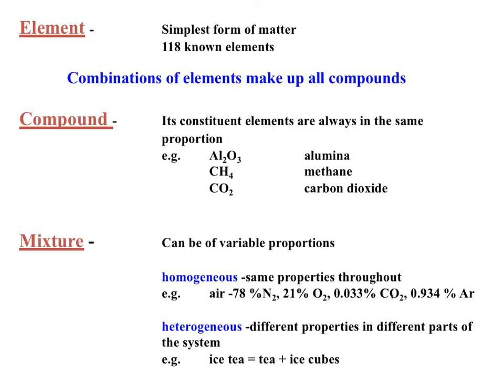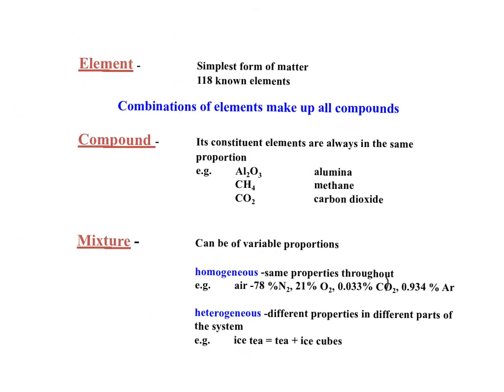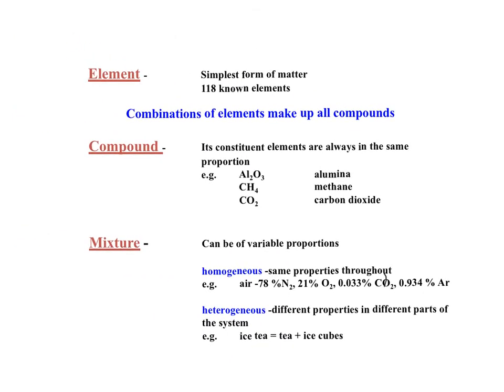Now this slide looks at the differences between elements, compounds, and mixtures. The periodic table now has 118 known elements, and elements are the simplest form of matter. If you take materials and grind them down and there's no way to separate parts of it, that's the simplest form — not talking about breaking atoms into protons, neutrons, and electrons, but just the form of matter itself.